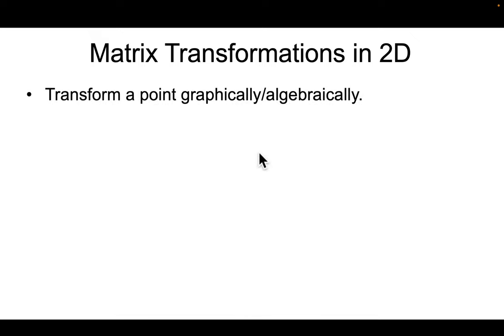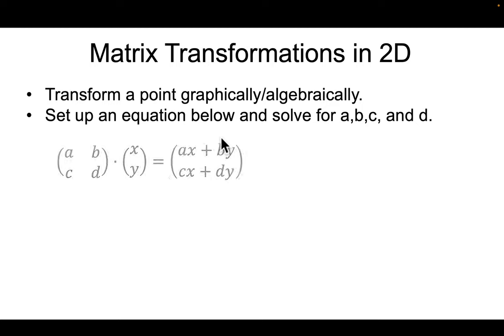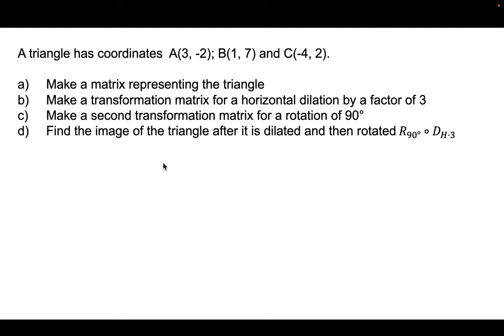When thinking about matrix transformations in two dimensions, think about it in terms of some point. Try to generalize it algebraically. Write down the structure and solve for a, b, c, and d to get what you want. What's really cool is you can apply this to shapes as well. Pause the video, try setting this problem up — see if you can find a, b, c, and d — then come back and we'll solve it together.